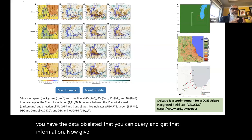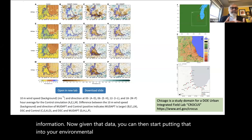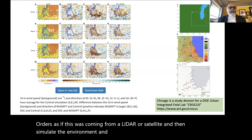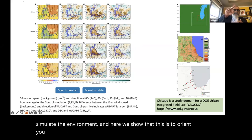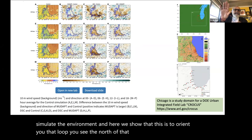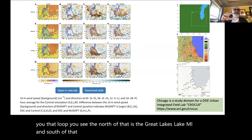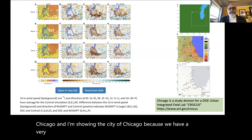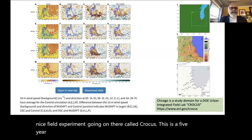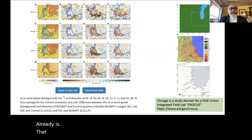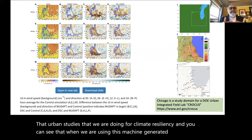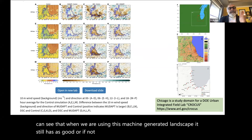Given that data, you can then put it into your environmental models as if it came from lidar or satellite. This is oriented around the city of Chicago — north of the loop is Lake Michigan. We have a nice field experiment there called CROCUS: a five-year Department of Energy Urban Integrated Field Lab on climate studies. Using this machine-generated landscape still produces fields as good as or better than human-generated ones.